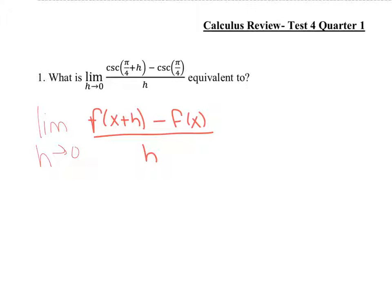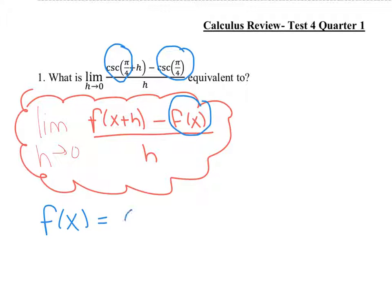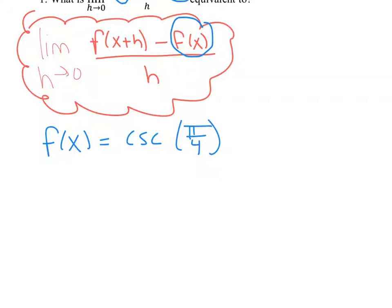Here, you would plug in a function to find your derivative the long way. This is the real rule of how to find the derivative. What they did is they plugged in the function they're trying to find the derivative of, and you've got to find that function. That function would exist right here — just that piece without the h — so the function we have here is cosecant of π/4.